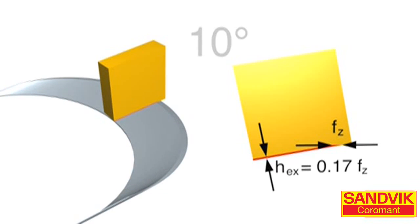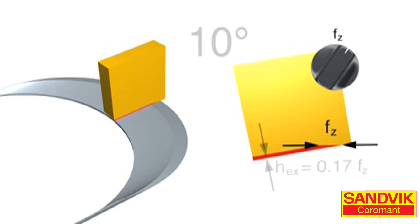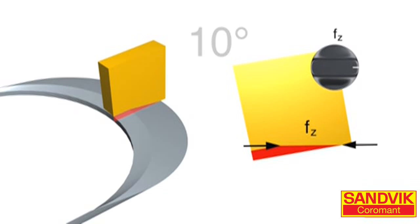With a 10 degree entry angle, we can increase feed by nearly 6 times, but are unable to achieve the same depth of cut. Small entry angles are ideal for high feed machining with low depths of cut.